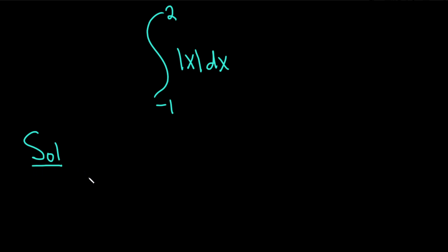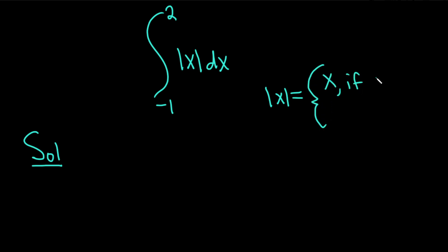Solution. Recall that the absolute value of x is equal to a piecewise function. It's equal to x if x is greater than or equal to 0, and it's equal to minus x if x is less than 0.